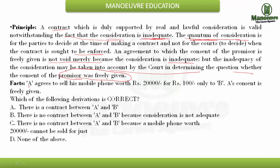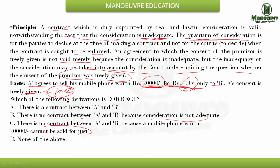The facts of this case: A agrees to sell his mobile phone worth Rs. 20,000 for Rs. 100 only to B. A's consent is freely given — they are already mentioning there is no coercion, no force. So the quantum amount is not a problem because both parties have mutually agreed to buy or sell the Rs. 20,000 phone for just Rs. 100. Now, which of the following derivations is correct? The quantum of consideration is not important as long as the consent is given freely.